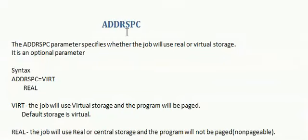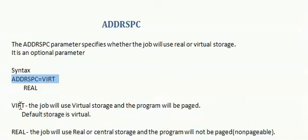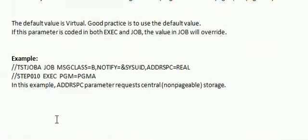The ADDRSPC parameter specifies whether the job will use real or virtual storage. ADDRSPC equal to VIRT or REAL can be coded. If VIRT is coded, the job will use virtual storage and the program will be paged; the default is virtual. If REAL is mentioned, the job will use real or centralized storage and the program will not be paged. In this example, the ADDRSPC parameter is requesting central storage, that is real storage.